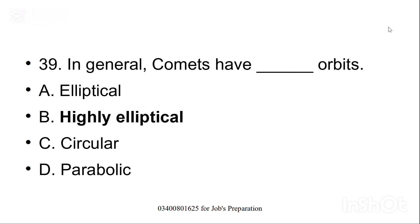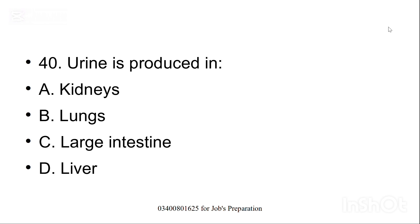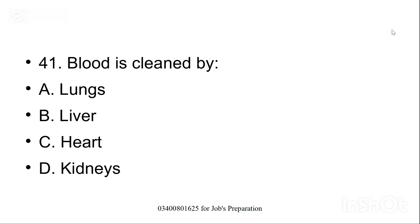In general, comets have dash orbits. Option B, highly elliptical orbits. Urine is produced in, urine kahan produce hoti hai? Option A, kidneys is the correct option. Blood is cleaned by, option D, kidneys is the right option.